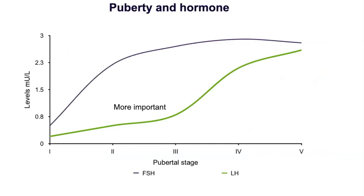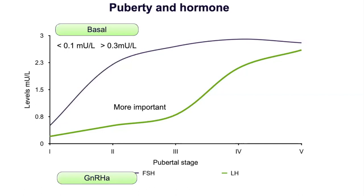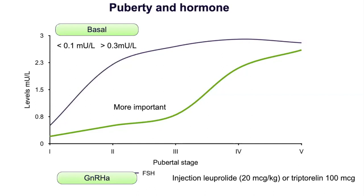FSH level in pre-pubertal females is higher relative to LH and may overlap with pubertal levels. LH shows a 25-fold increase with the onset of puberty, making it a reliable marker. A basal LH less than 0.1 mIU/dL indicates pre-pubertal level, whereas more than 3 mIU/L indicates pubertal onset. Since LH is secreted in a pulsatile fashion, pooled samples are needed. A stimulated LH more than 5 mIU/L indicates central precocious puberty. GnRH stimulation can be done with leuprolide 20 mcg/kg, with LH and FSH measured after two hours.